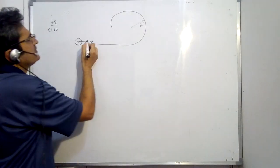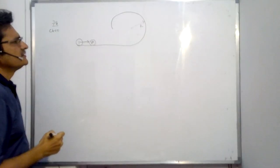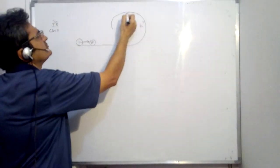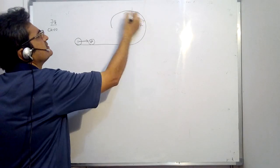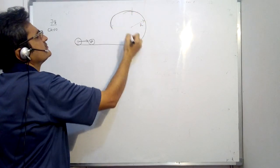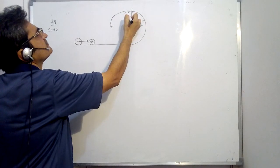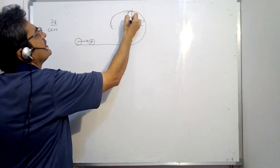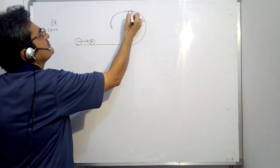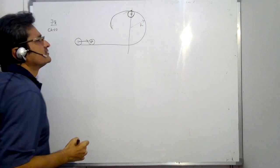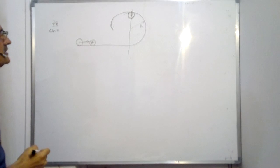And we have to find out what should be the initial velocity so that at least it rolls through. For it to roll through complete this motion, it has to pass through a critical point which is the topmost point. And if it is able to retain its contact at the topmost point, it will roll through.